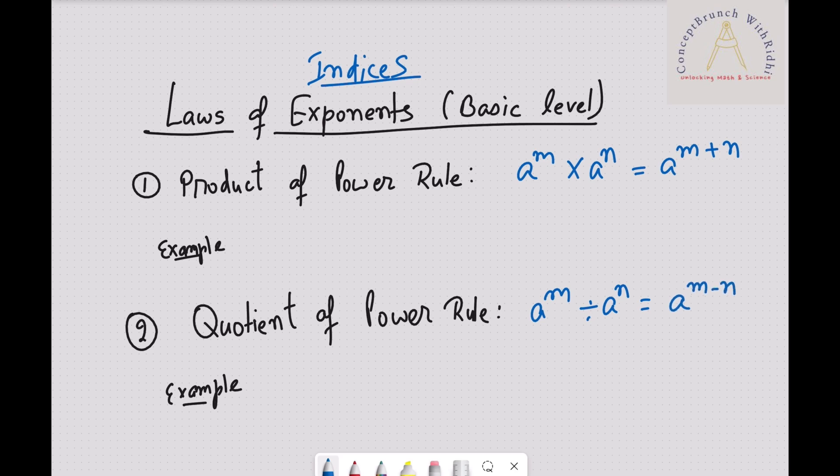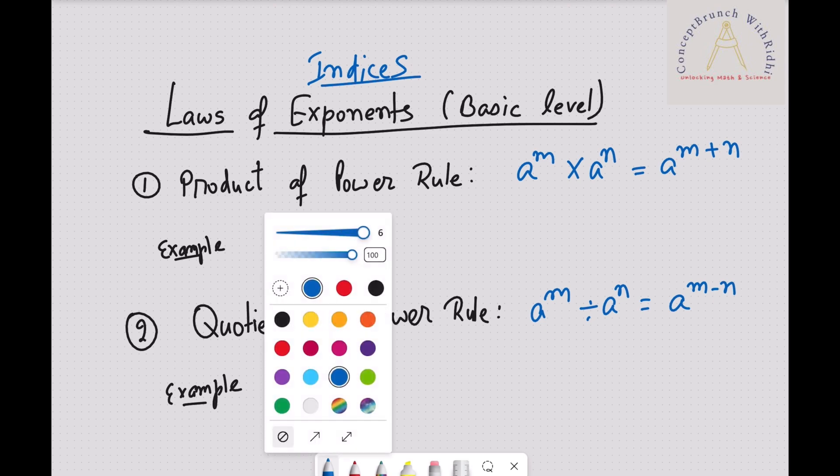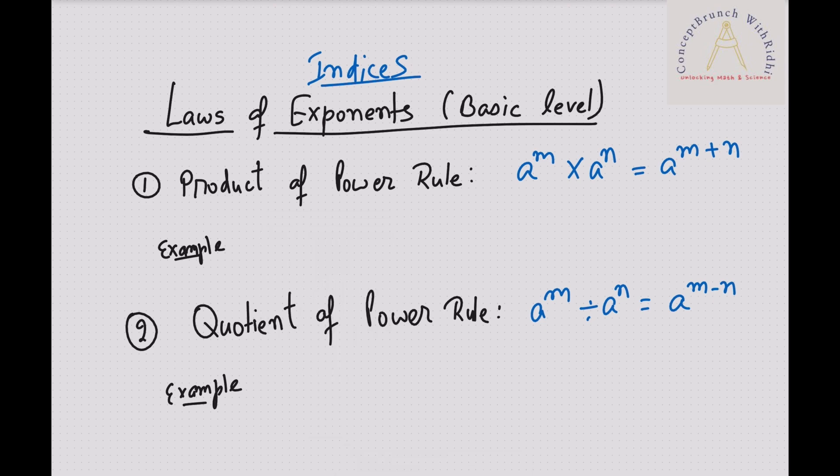Let's take an example for this. If we'll take an example here, for the first case, suppose it is 3 square times 3 to the power 3, we can write 3 to the power 2 plus 3, and we can write 3 to the power 5, that is 243. In the second case, let's take an example. You can take an example as 5 to the power 5 division 5 to the power 3, so we can write 5 to the power 5 minus 3, and we can write 5 square, and that is 25.